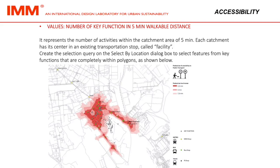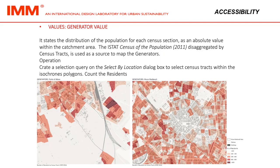Number of key functions in 5 minutes walkable distance: it represents the number of activities within the catchment area of 5 minutes. Each catchment has its center in an existing transportation stop called facility. Create the selection query on the select by location dialog box to select features from the key functions that are completely within polygons. Generator value: it states the distribution of the population for each census section as an absolute value within the catchment area. The ISTAT census of the population 2011, disaggregated by census tracts, is used as a source to map the generators.